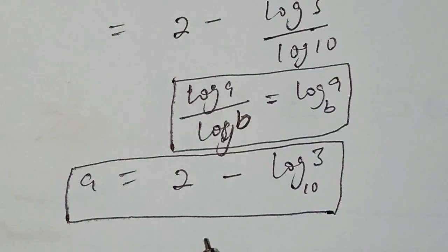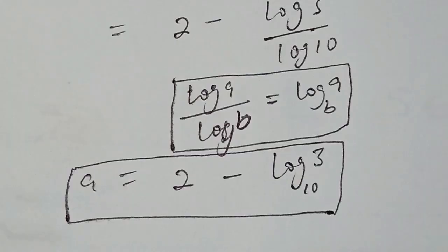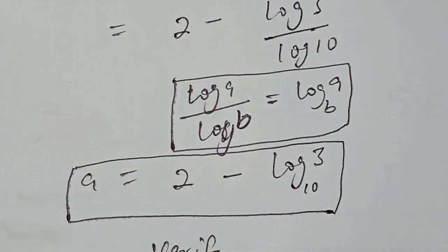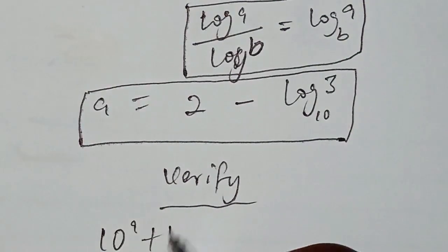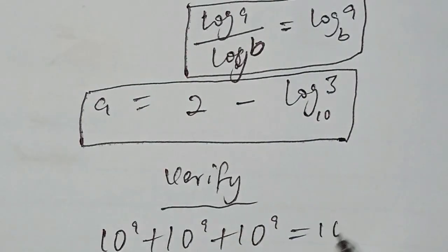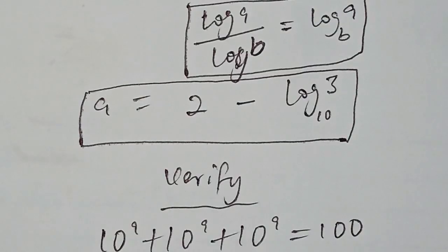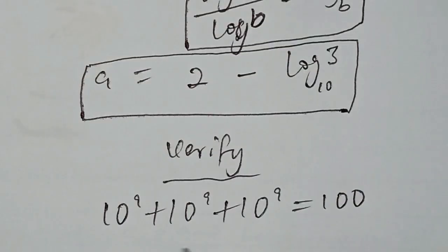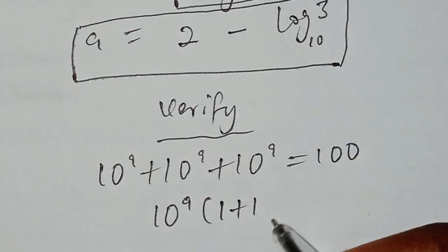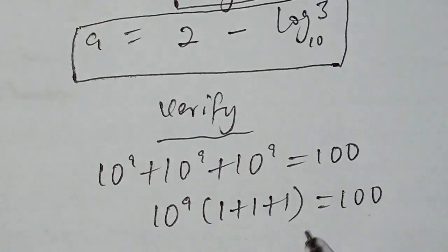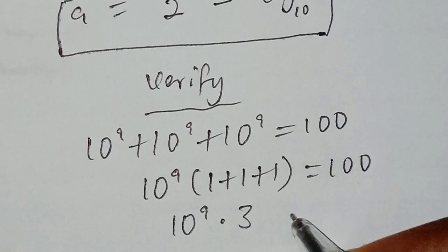Now that we have the value of a, we need to verify its correctness by comparing with the original question. To verify: from our question, 10^a + 10^a + 10^a = 100. We simplify this as 10^a times (1 plus 1 plus 1) equal to 100, giving us 10^a multiplied by 3 equal to 100.